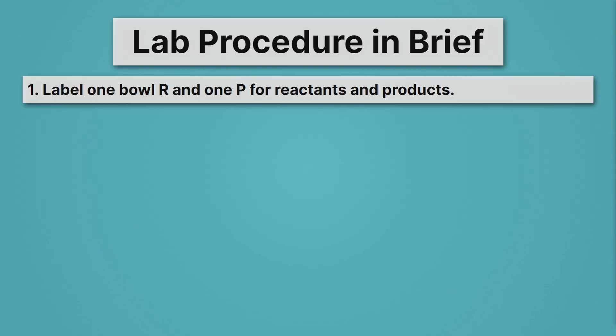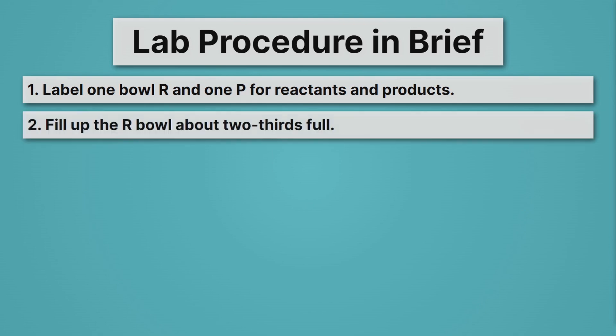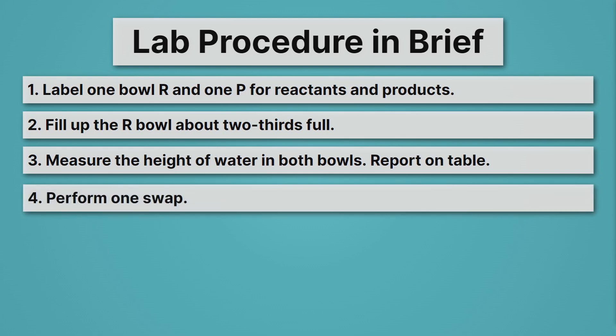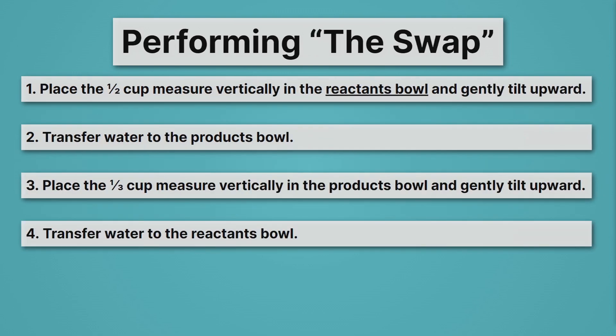First, you'll label one bowl R and one P for reactants and products. Then you'll fill up the R bowl about two thirds full. Then we'll measure the height of water in both bowls and report it on our table — the height of water in the products bowl should start out as zero. Then you'll perform one swap: taking water forward and backwards. You'll place the one-half cup measure vertically in the reactants bowl, gently tilt it upward, then transfer the water to the products bowl — that's running the reaction forward. Then run it backwards by placing the one-third cup measure vertically in the products bowl, gently tilting it upward, and transferring it to the reactants bowl. Congratulations, you've performed a swap.